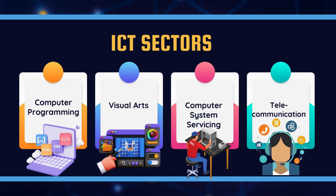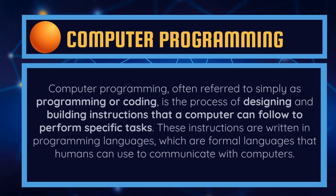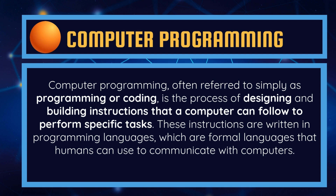The four key sectors within ICT are computer programming, visual arts, computer system servicing, and telecommunications. The first sector is computer programming, often referred to simply as programming or coding. It is the process of designing and building instructions that a computer can follow to perform specific tasks. These instructions are written in programming languages, which are formal languages that humans can use to communicate with computers.